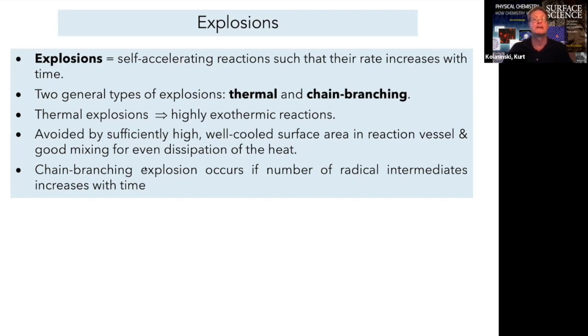In a chain-branching mechanism, we have to keep down the number of those reactive intermediates. We could, for instance, add an inhibitor to the system, and that would make it less likely to explode.